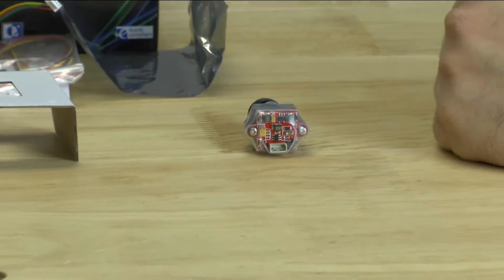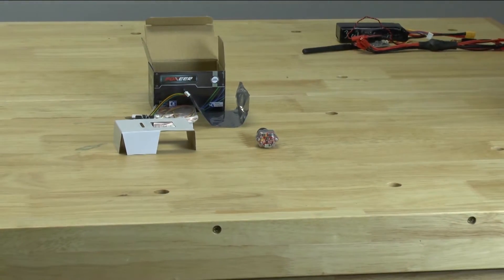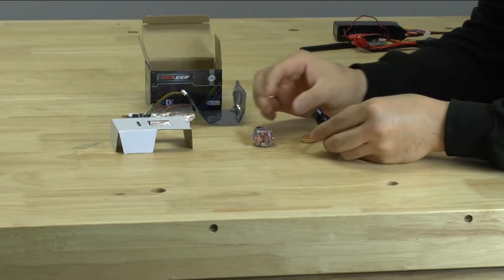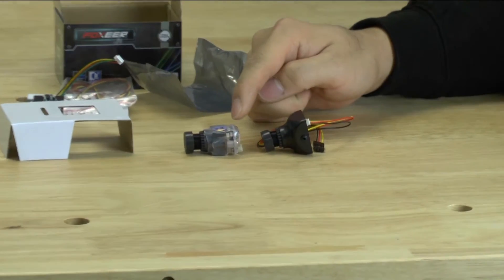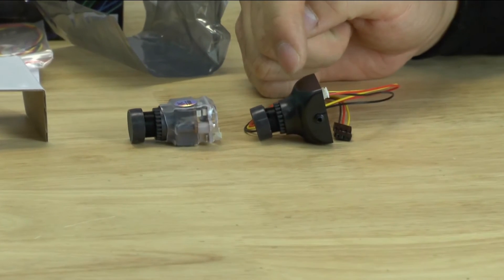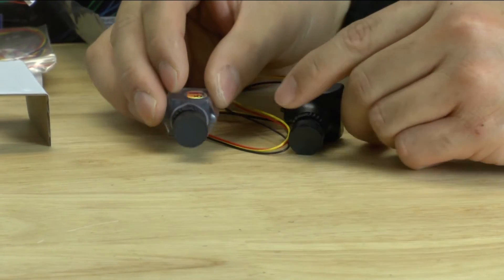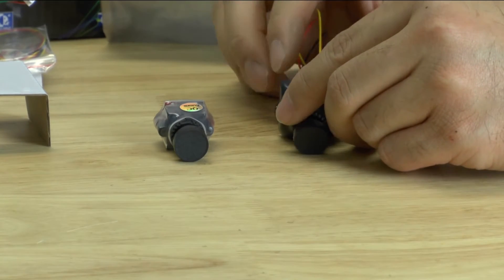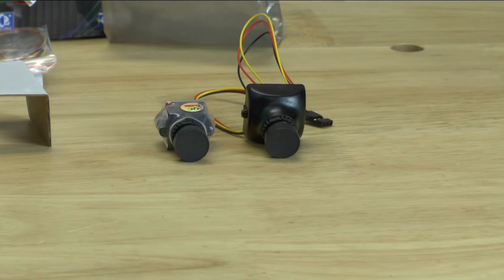And I'm going to go ahead and bring out the normal size one. So these two are the exact same camera. It's just that they've reduced the size of the board cam and obviously removed the case. So you can see the size difference. If you have a specific build that requires the smaller size camera.